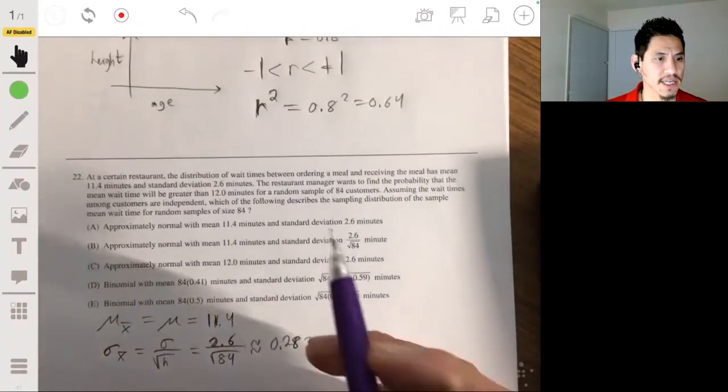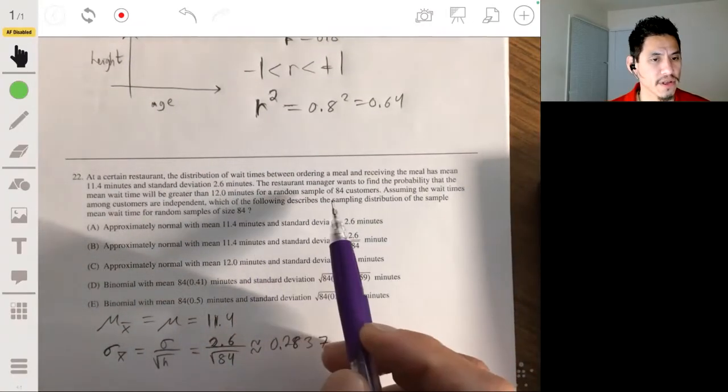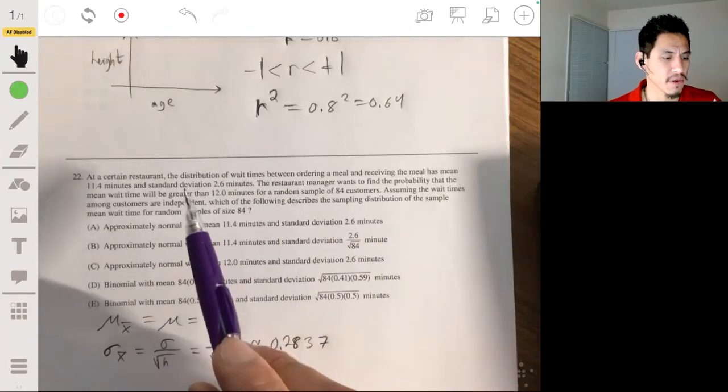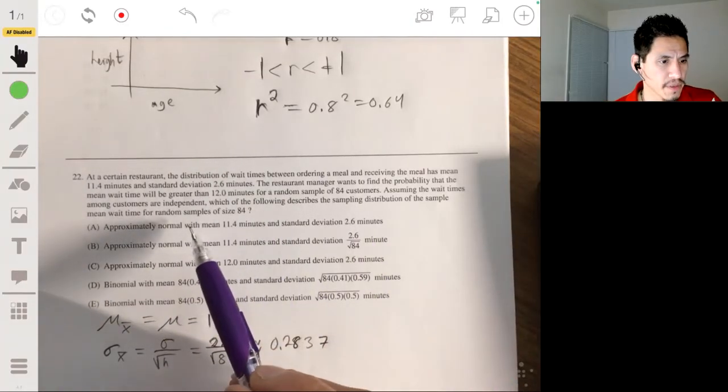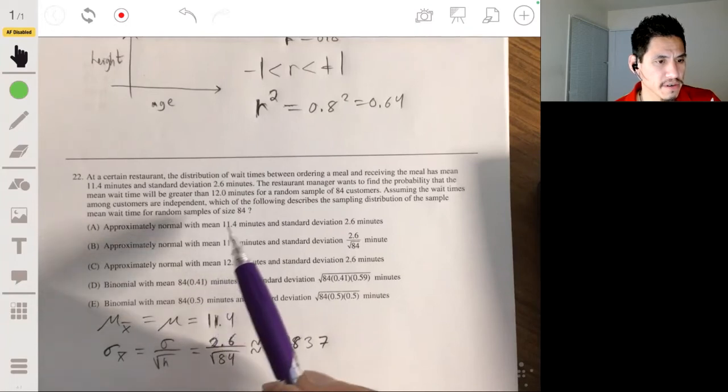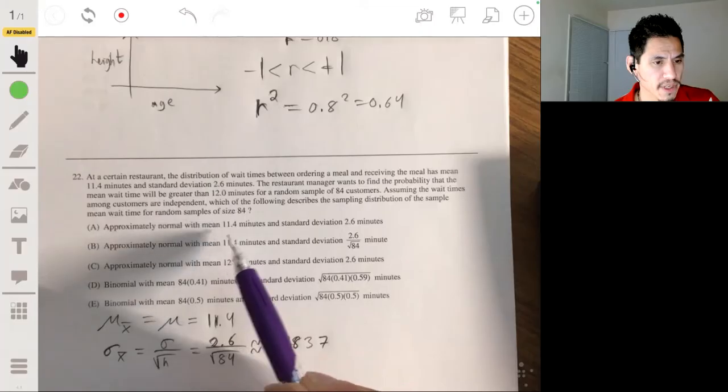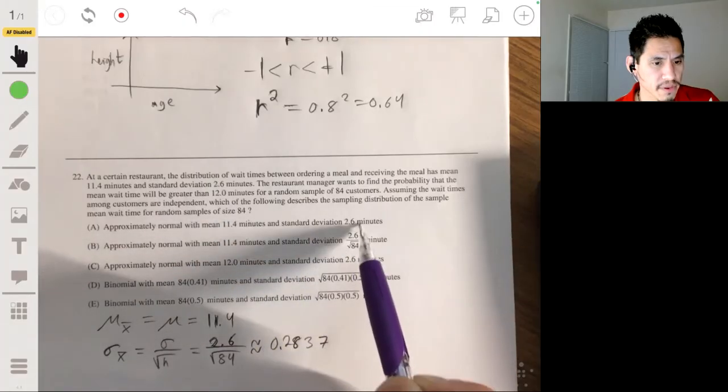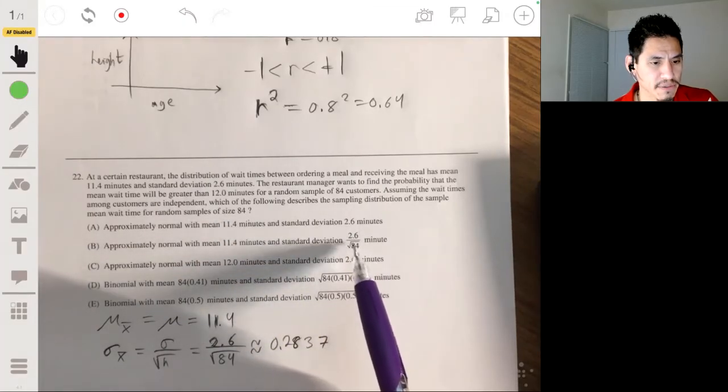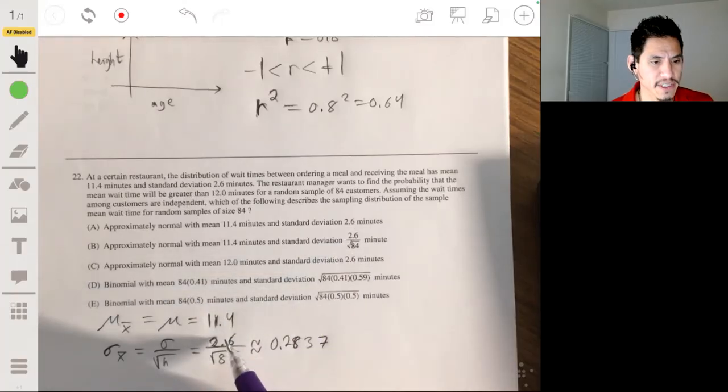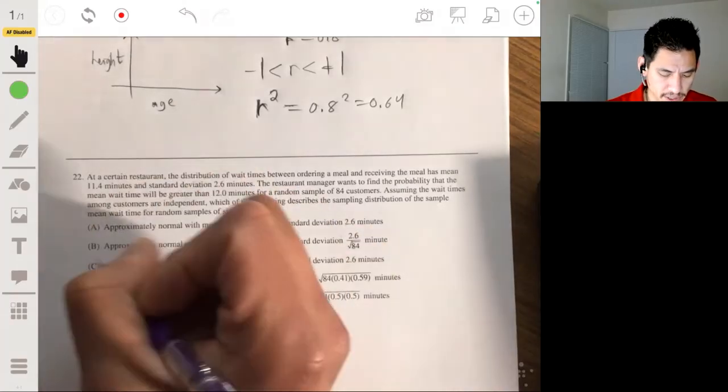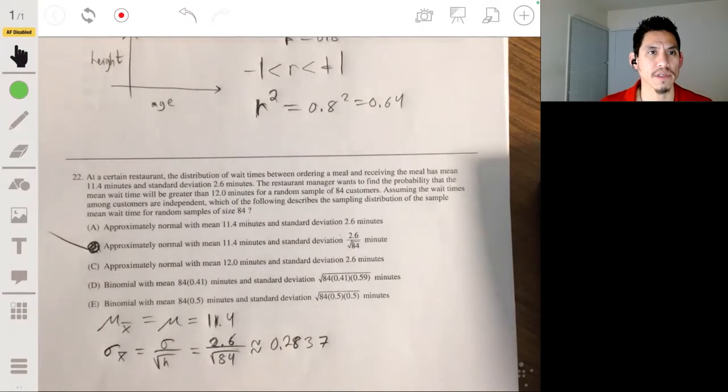And then the sample size is more than 30. The central limit theorem is met. So it's going to be approximately normal. So it could be A, B, or C. So down to A or B. Both have mean standard deviation. Well, it didn't simplify it, but that's what we would get, 2.64 divided by the square root of 84. So your answer will be B. Alright, okay.